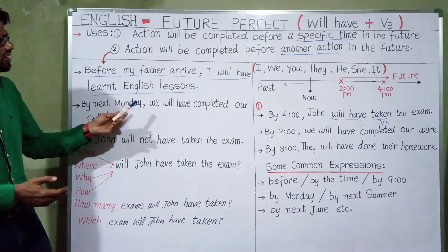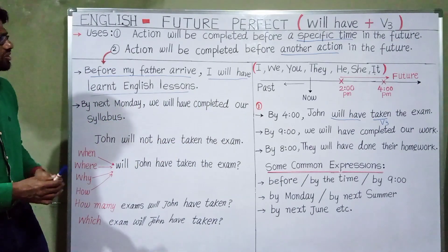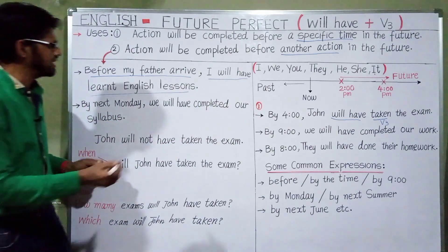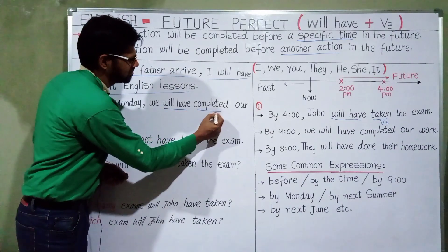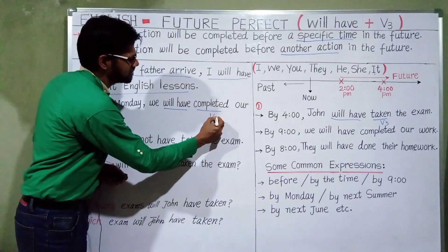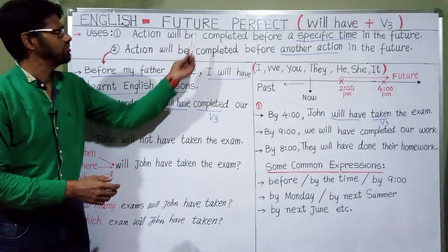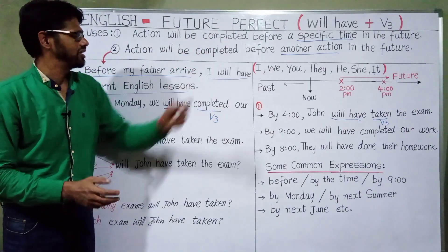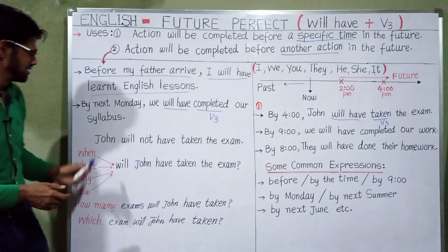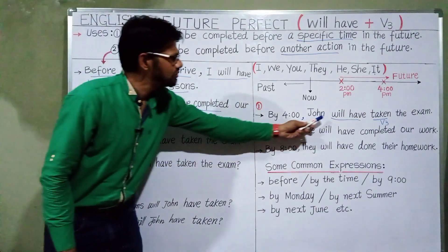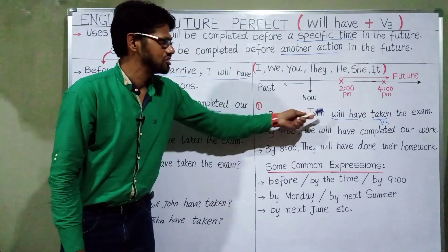By next Monday, we will have completed our syllabus. You can notice that I have used will have plus V3 form. This is the structure and identification of future perfect tense. So for example: John will have taken the exam — this is the positive form.